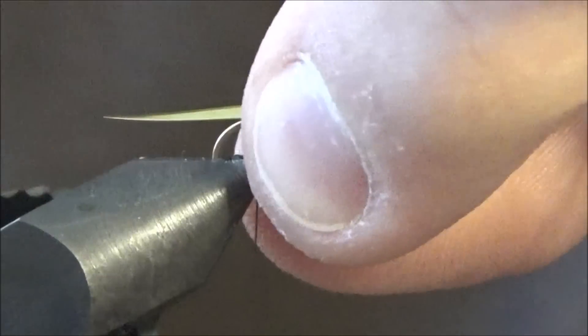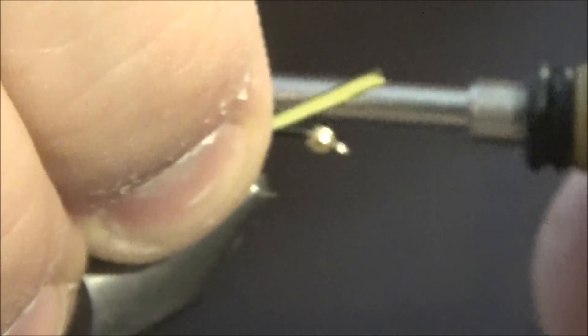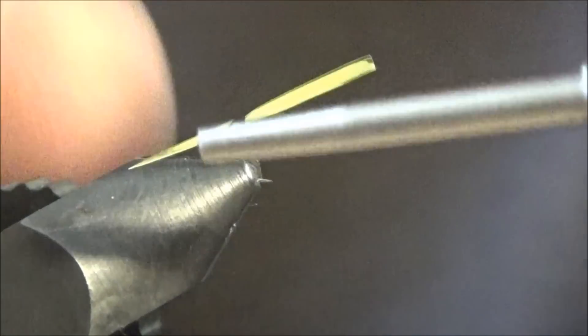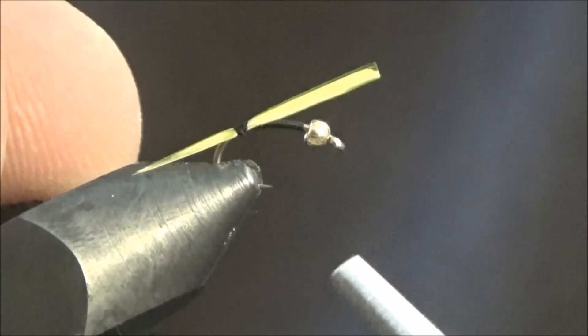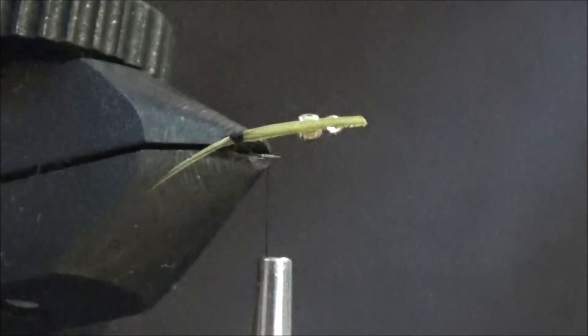You're going to use that to just get separation from the two biots when you tie them in. You're going to eye it up, probably want it a little bit longer than the shank. That looks good, and I'm just going to take it back right to like above where the barb would be. Yeah, so it looks like that.